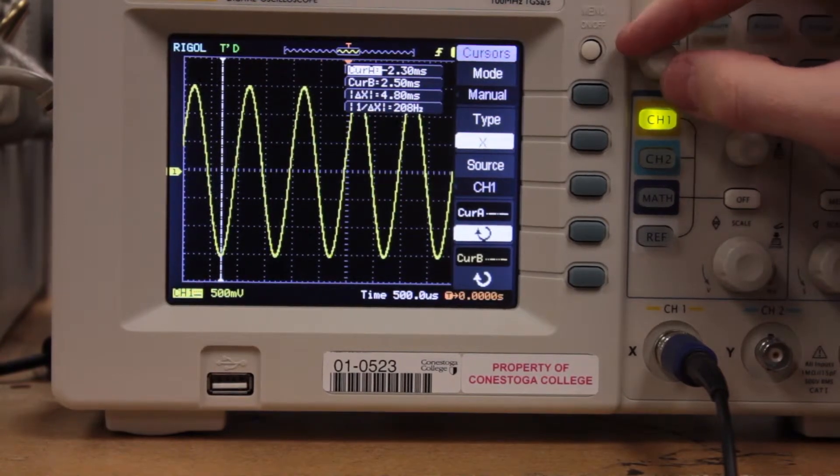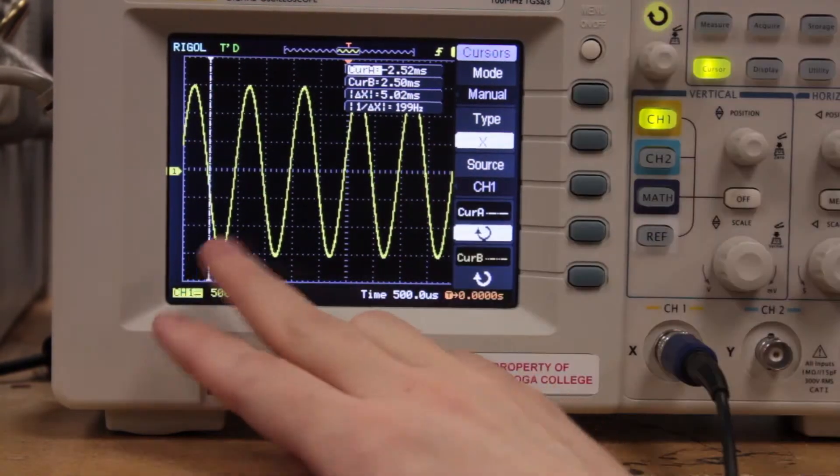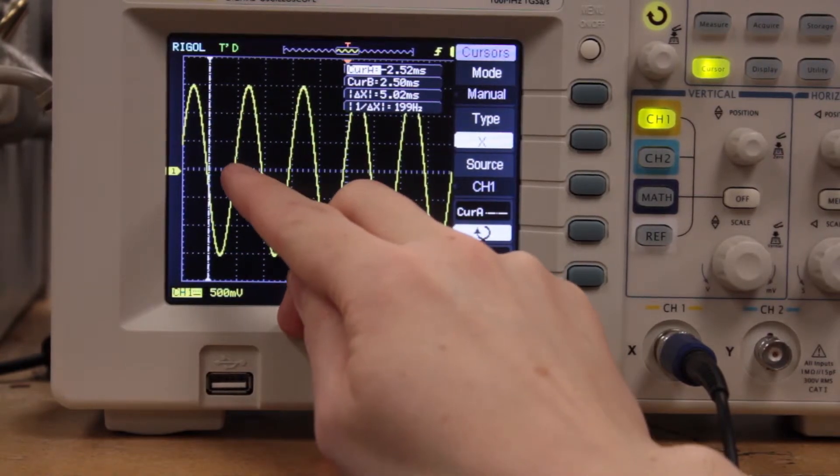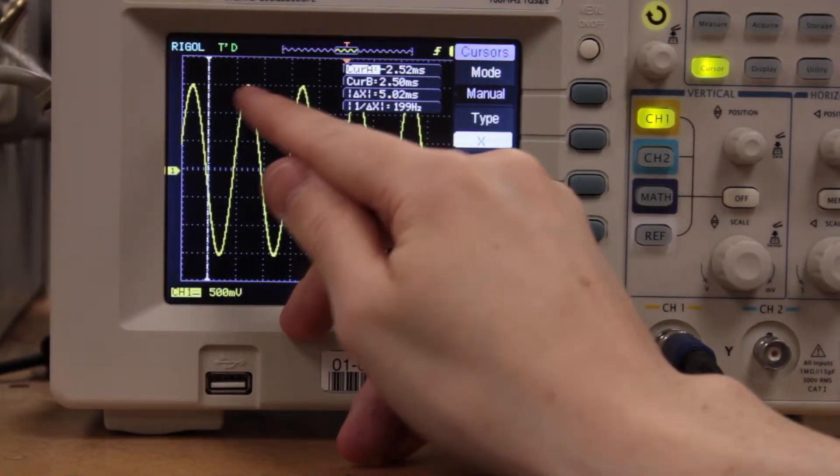So we're just going to pick a spot on the waveform. Now we can pick either the bottom trough, the center axis intercept here, or the peak.